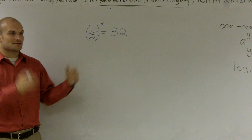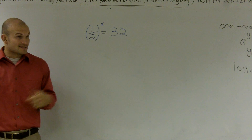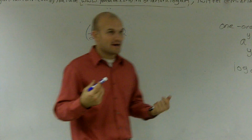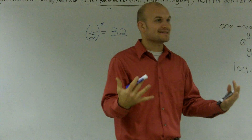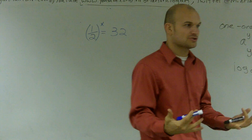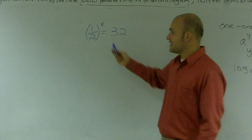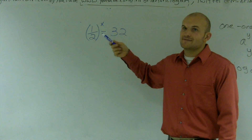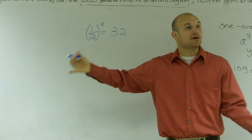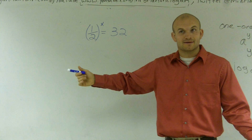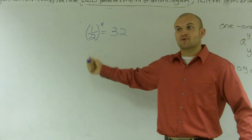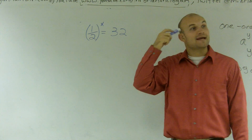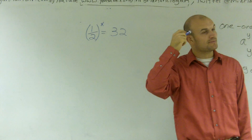So for (1/2) raised to x equals 32. Now this is going to be a pretty difficult problem, because if you think about this in positive numbers, which you're so used to, you'd say if I keep on multiplying 1/2 — 1/2 times 1/2 is 1/4 — I keep on getting smaller numbers, right? So there's a problem: how am I going to get to a bigger number? That's when negative exponents come into play.